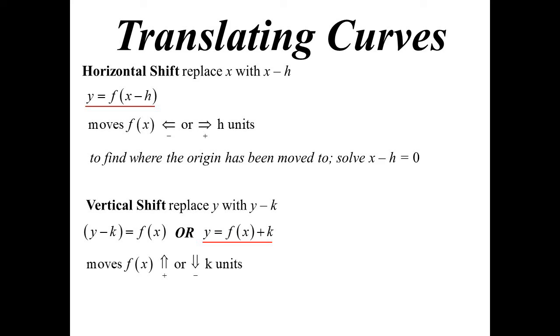So it'll go up or down, depending on whether it's positive or negative. And also, if you're unsure, just solve the equation. What would make y minus k equal to zero?